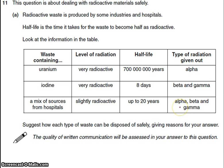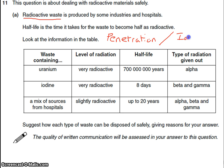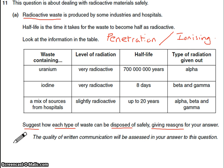This is a 6-mark question that a lot of students struggle with, but it's actually straightforward. It's about radioactive waste and how to dispose of it. You have to use the ordinary things you'd talk about with radiation — comment on the penetration of each type, the penetrating power, and how ionising they are. You have to suggest how each of the three types of waste can be disposed of, giving reasons. To get 6 marks, state a method of disposal for each type and give a reason for each one. Looking at uranium first: